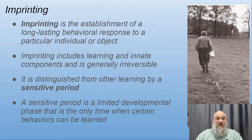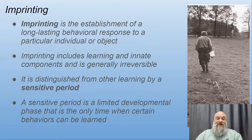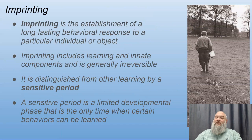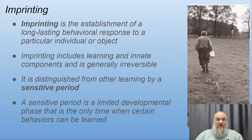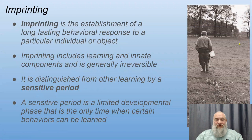An example is imprinting: the establishment of a long-lasting behavioral response to a particular individual or object. In waterfowl like geese, within the first couple of days — the sensitive period — goslings imprint on whatever is walking away from them, normally their mother. If a person is present instead, the goslings will imprint on that person, follow them everywhere, and won't even recognize their own mother if they weren't together during that sensitive period.